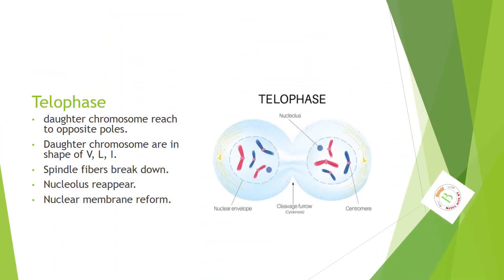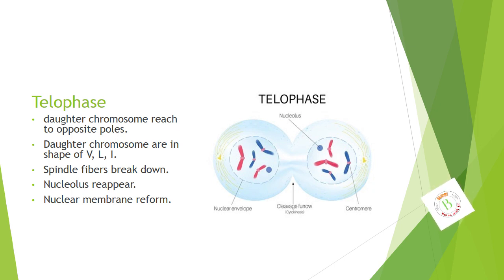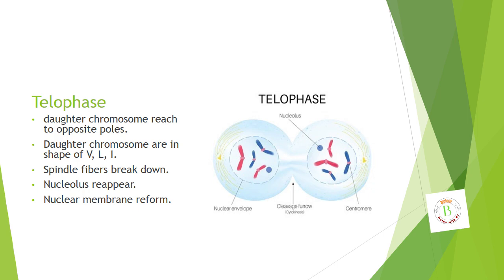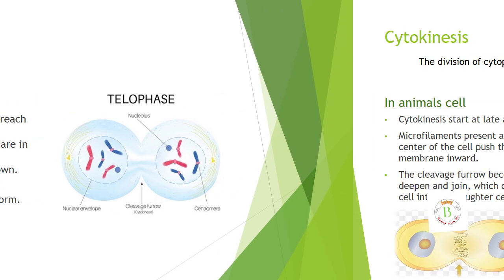Telophase. Daughter chromosomes reach opposite poles. Daughter chromosomes are in the shape of E, L, or I. Spindle fibers break down. Nucleolus reappears. Nuclear membrane reforms.